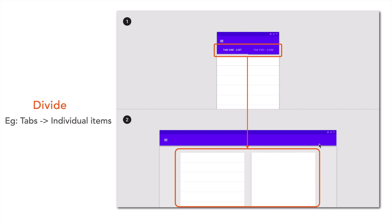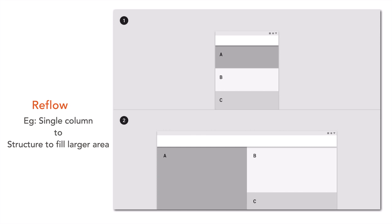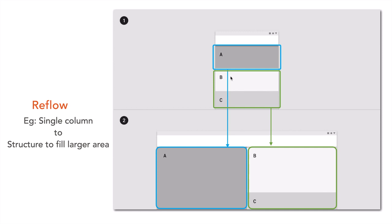Reflow is a useful pattern when you have a single column of items on a smaller screen and want to transform them into a combination structure on a larger screen. For example, three items A, B, and C in a single column on a smaller layout can be rearranged on a large layout so that A is on the left side and B and C are arranged in a single column on the right side.